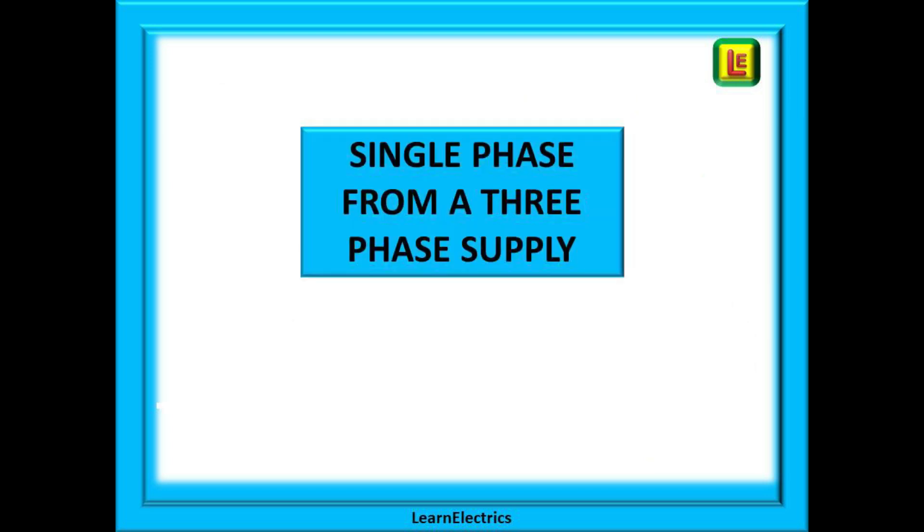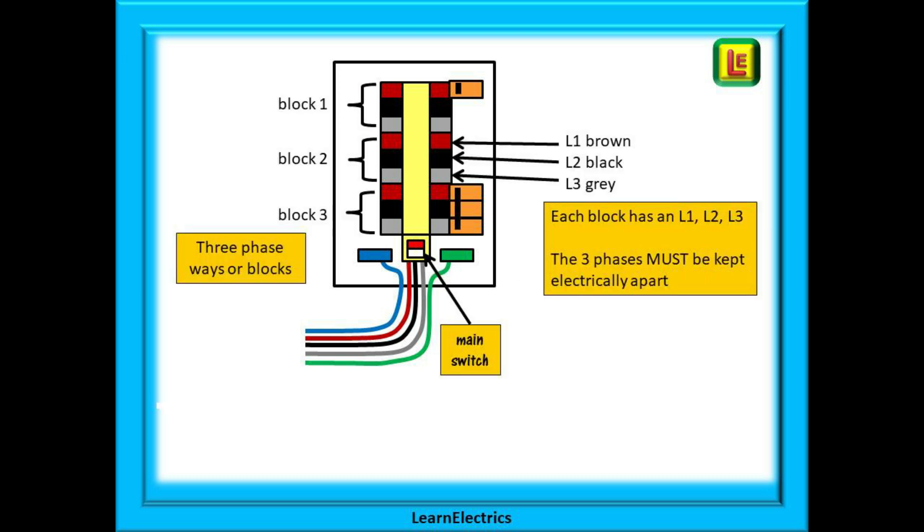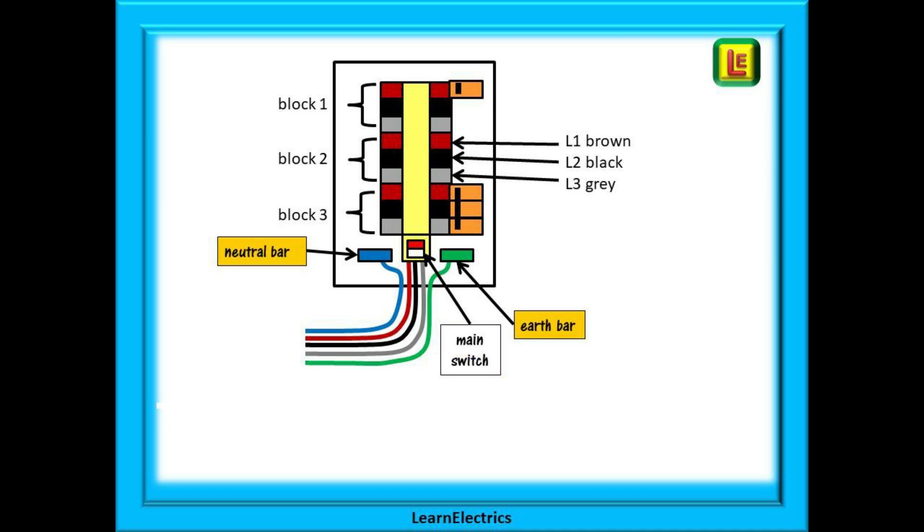Another question that we are often asked, how do we get a single phase supply from a three-phase distribution board? Let's look at this. Here we have a very basic sketch of a three-phase distribution board. On this board, there are six three-phase ways, three on the left and three on the right. Each way is a block of three phases, shown here as brown, black and grey, L1, L2, L3. These phases, L1, L2 and L3, must always be kept electrically separated from each other. And we have shown the main switch that will turn off all the power to the board. There is also a neutral bar and an earth bar. The supply cable brings five conductors into the distribution board. The three phases, plus neutral, plus earth.